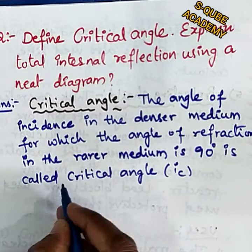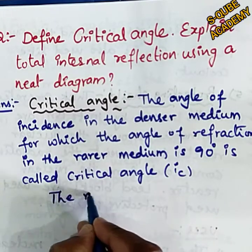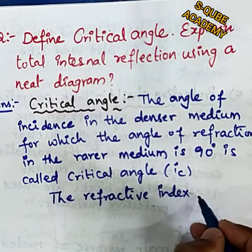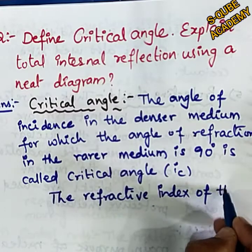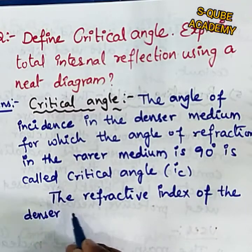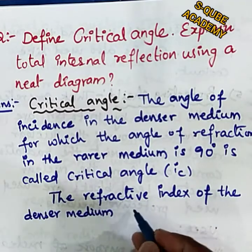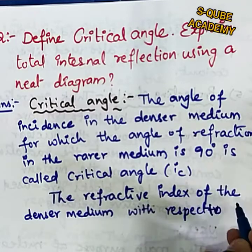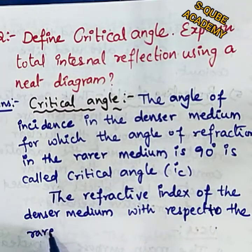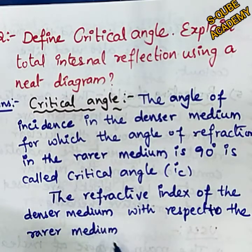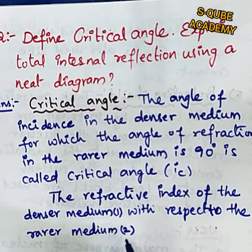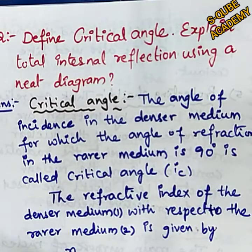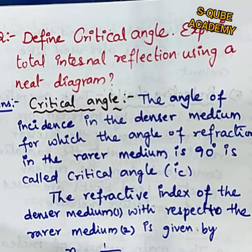The refractive index of the denser medium with respect to the rarer medium is equal to 1 divided by sin(ic). So the refractive index of the denser medium equals 1 by sin ic.